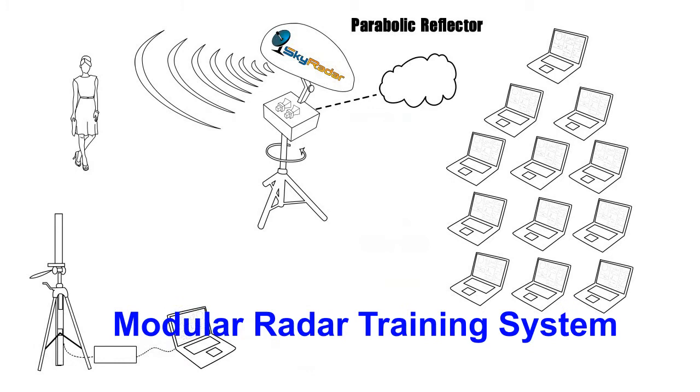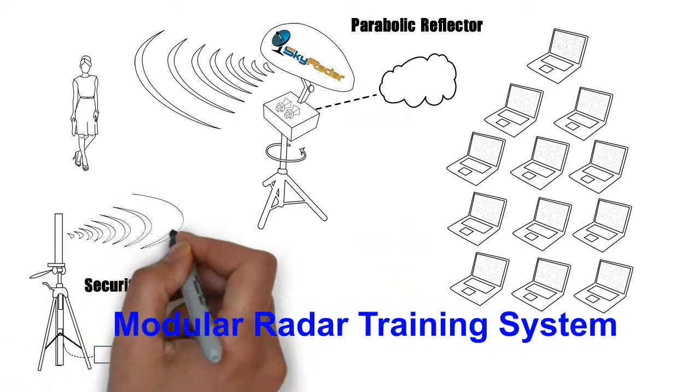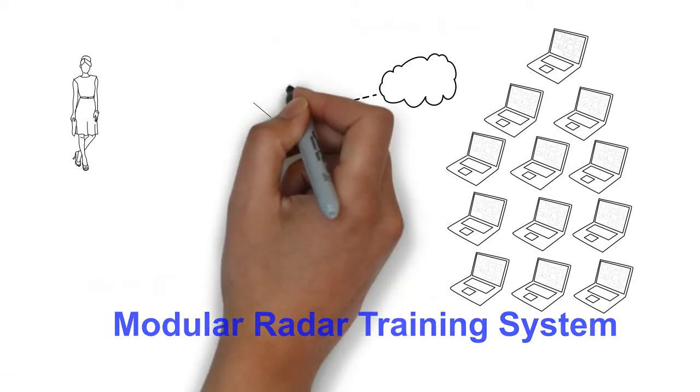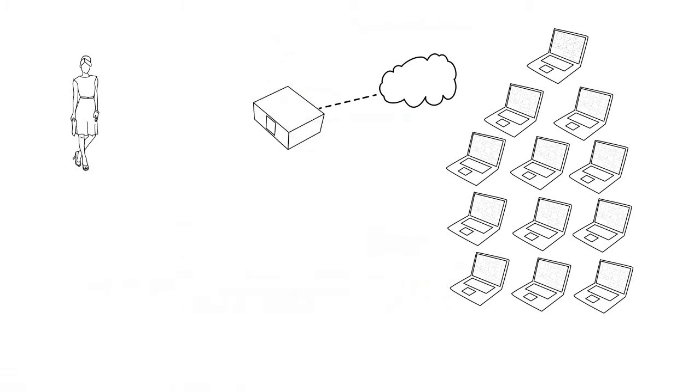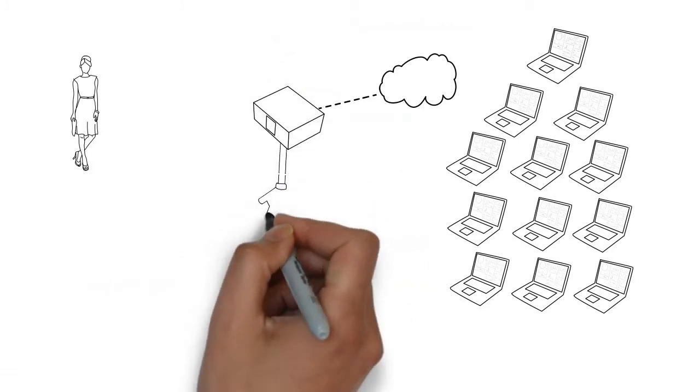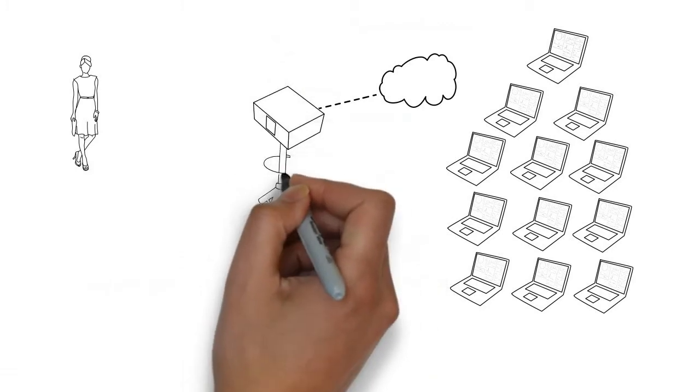You can also add SkyRadar's security unit to do computer-based jamming, creating false targets. With your SkyRadar FreeScopes, you then can practice electronic counter-counter measures to discriminate real objects from the fake ones.